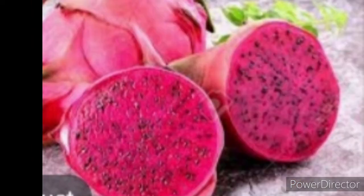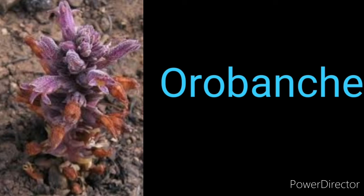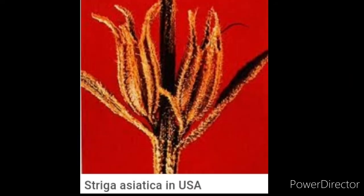Can you think of some plants in which fruits contain a very large number of seeds? Orchid fruits contain thousands of small seeds. Similarly, fruits of some parasitic species like Orobanche and Striga also contain large numbers of seeds. Have you seen the tiny seeds of the ficus plant? Many small seeds are present in a single fruit.